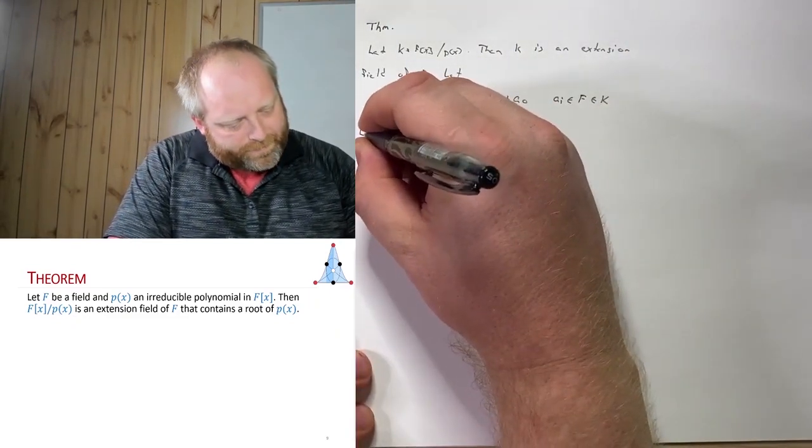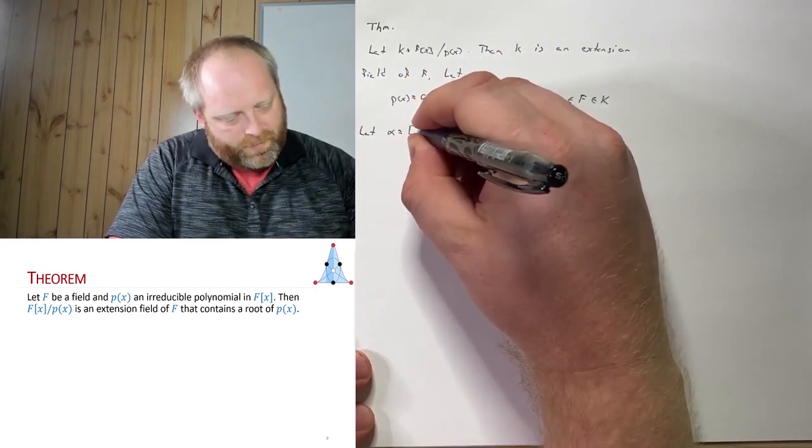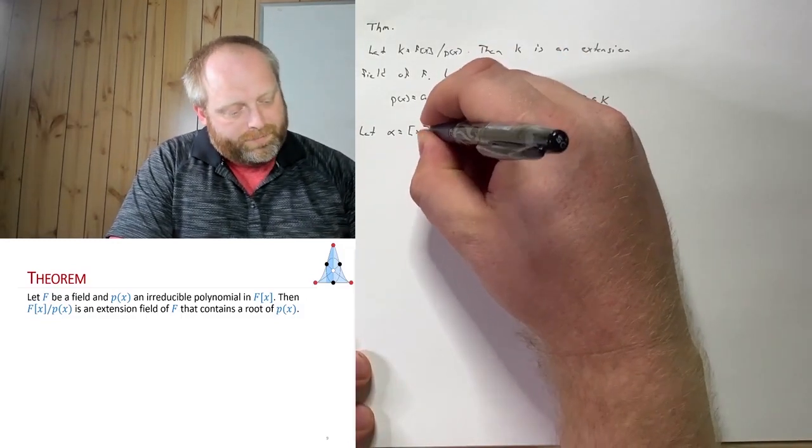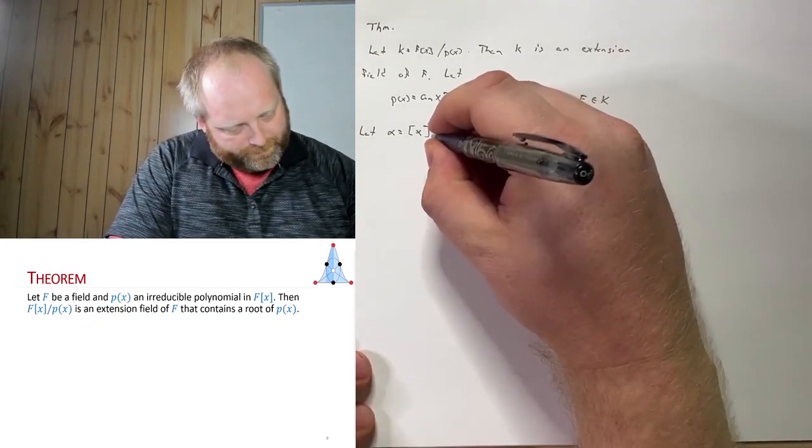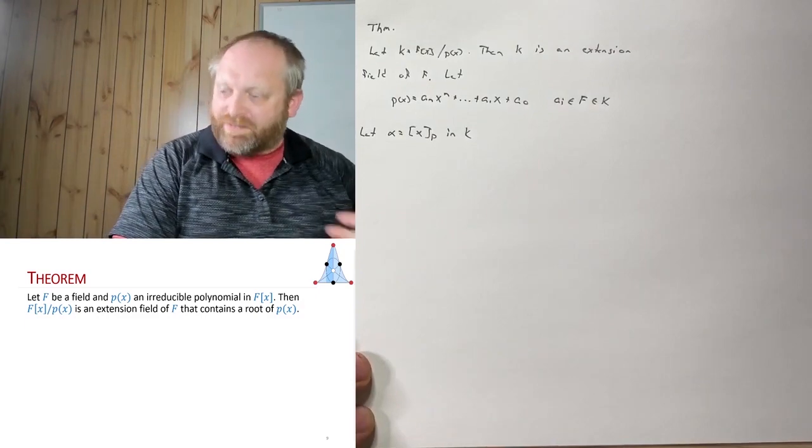Let's let alpha be equal to the congruence class of x mod p. And of course, this is inside of K.